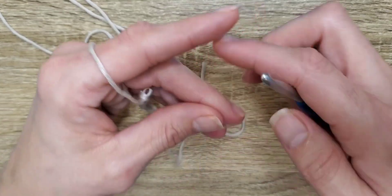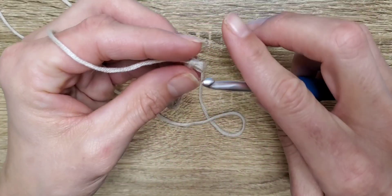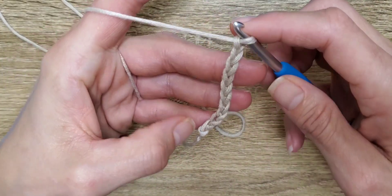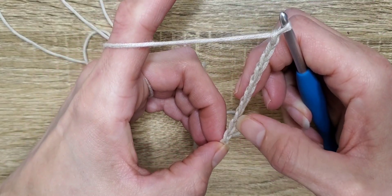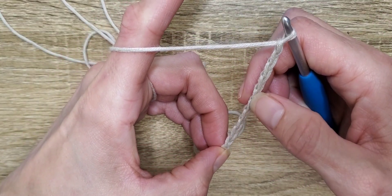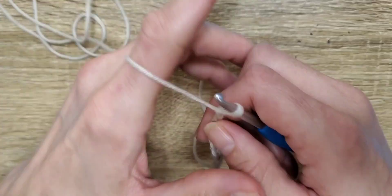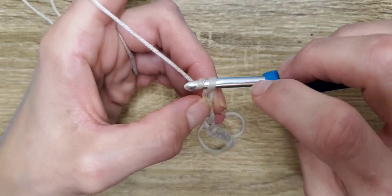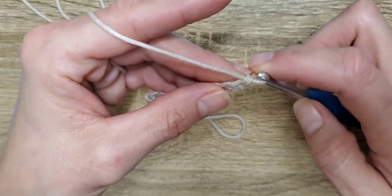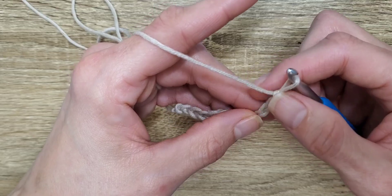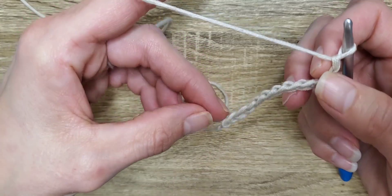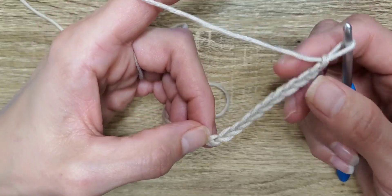So, let's see how many chains we've got here. So, the chains are the V's. 1, 2, 3, 4, 5, 6, 7, 8, 9, 10. And I'm going to do 11. Because when we turn our work, we're going to skip this first one. So, it'll actually be 10. So, here's our foundation chain.